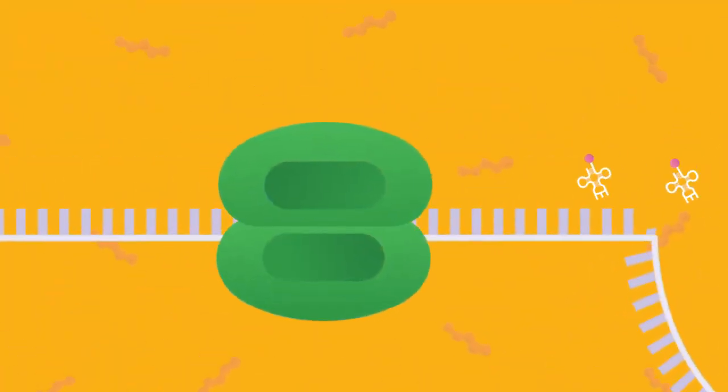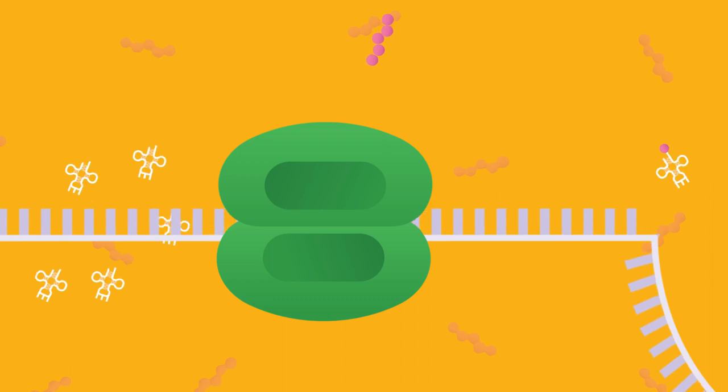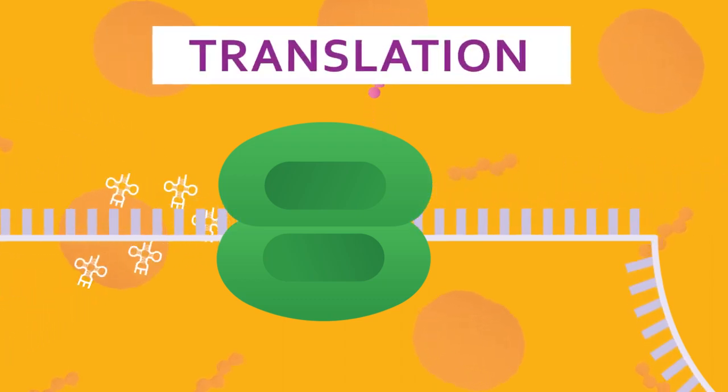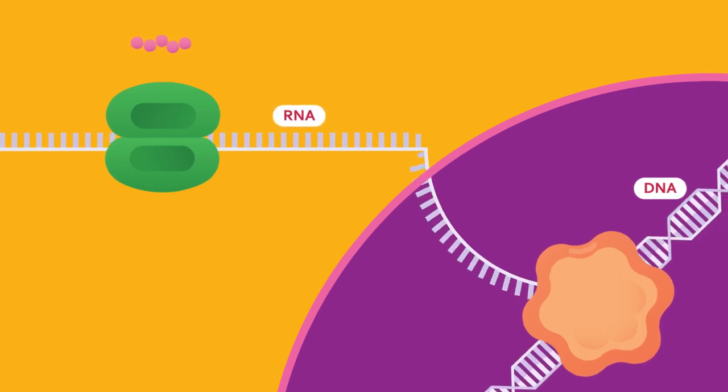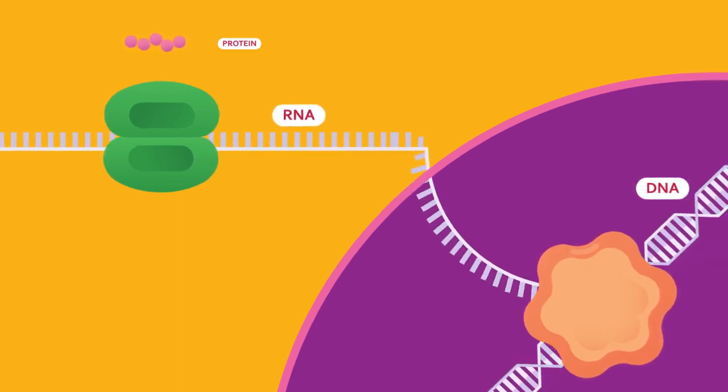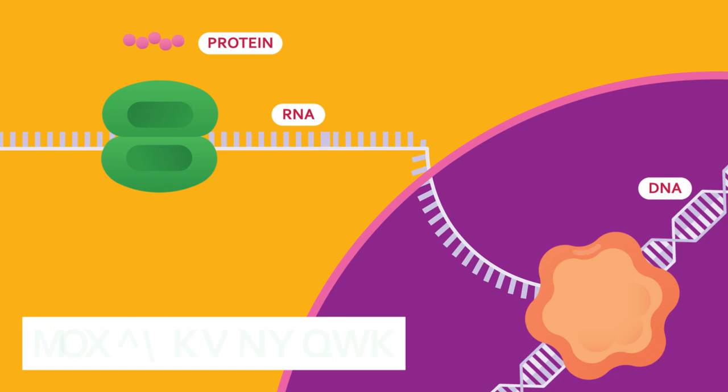It is further translated into proteins by a process termed translation. The explanation of DNA conversion into RNA, and finally RNA into proteins, is called central dogma.